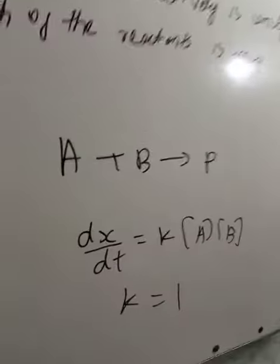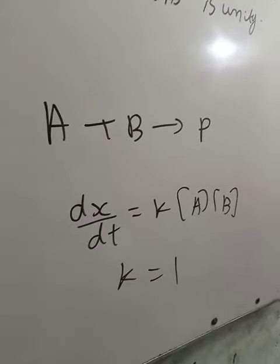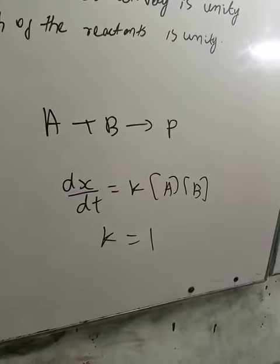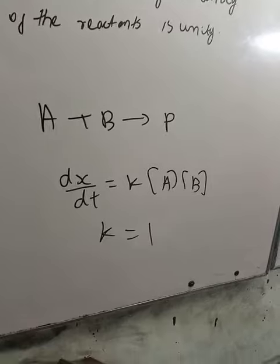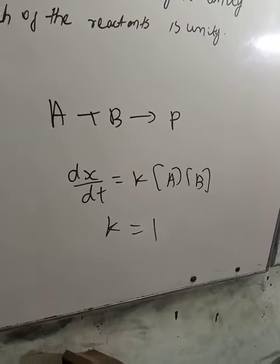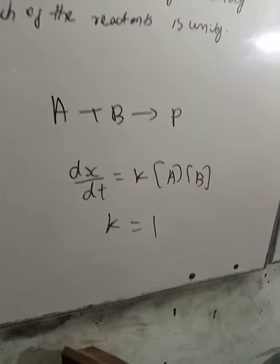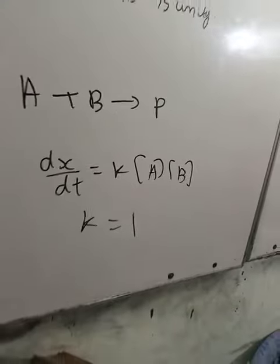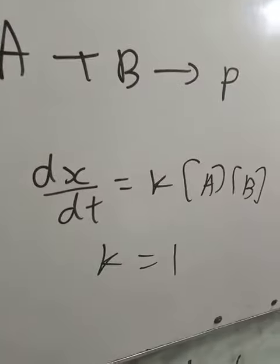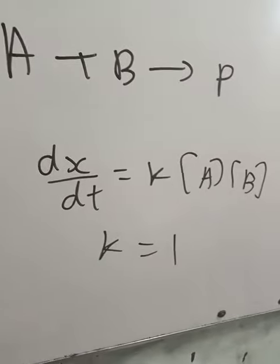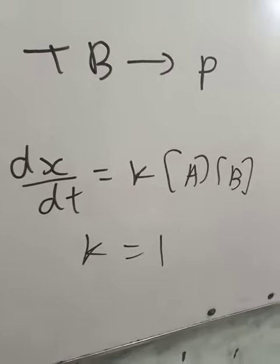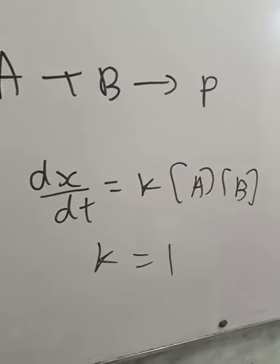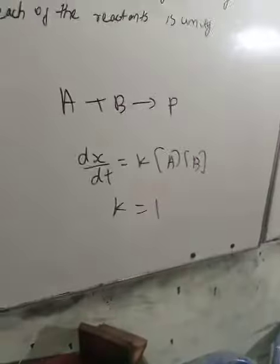What is the rate of reaction concept? A and B are reactants and we create a product. The rate of reaction formula is: Rate = K[A][B], where A and B are the reactant concentrations. K is called the rate constant.